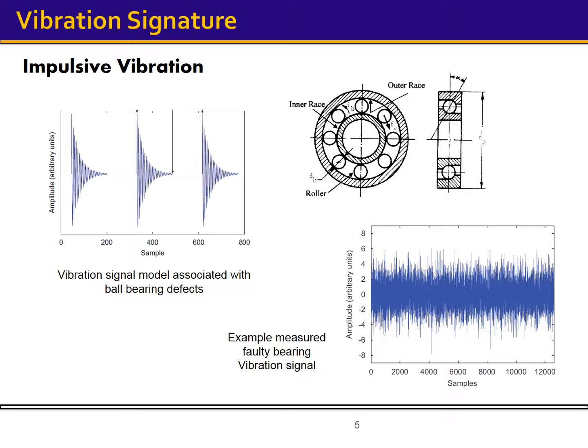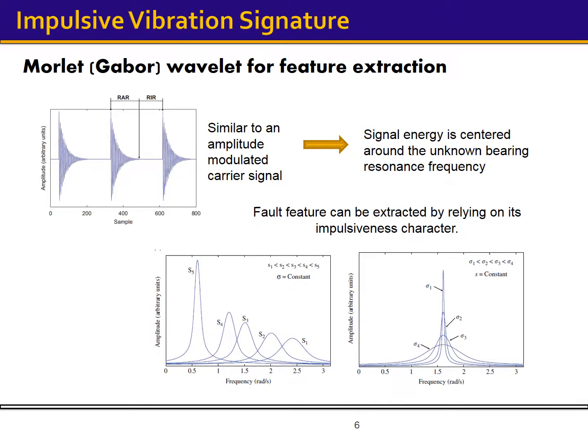As seen in the figure, the fault signature is fully immersed in background noise and other vibrations, and hence further processing is needed. Using this impulsive character, we are able to extract fault signatures and subsequently detect defects. The impulsive vibrations are often accompanied by high frequency ringing caused by the excitation of resonance frequencies of the bearing. As a result, the energy of the fault signature is concentrated around this ringing frequency.